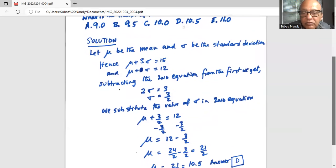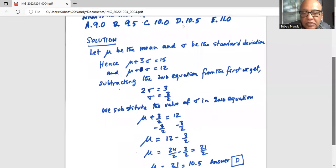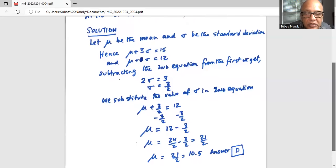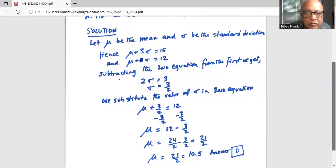Now 12 can be written as 24 over 2 minus 3 over 2. We converted 12 to 24 over 2 so that we have a common denominator of 2. So we have 24 over 2, from which we subtract 3 over 2, and we get 21 over 2. Now 21 over 2 is equal to 10.5.